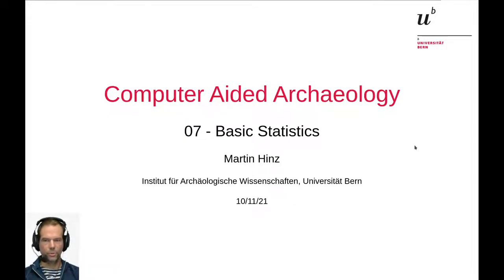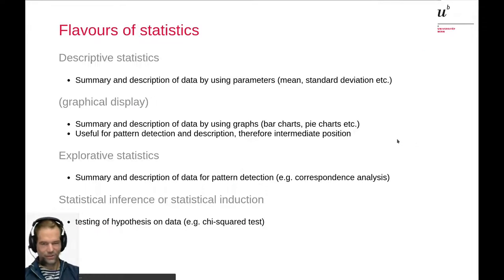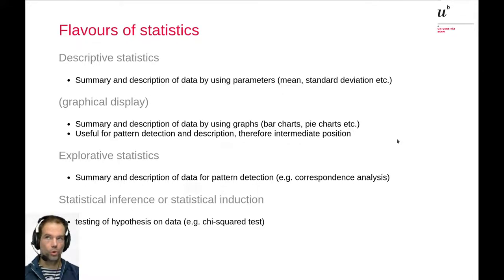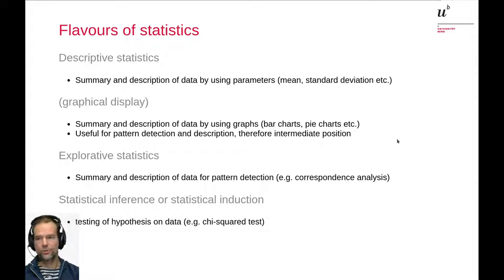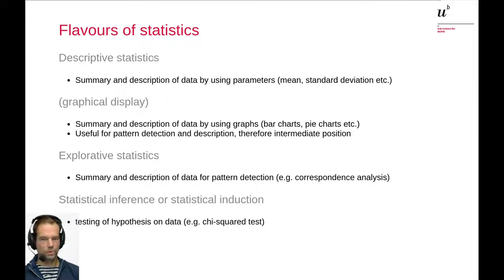In today's lecture we will talk about basic statistics. We already applied basic statistics in a certain sense, and we will have a view on another aspect here. The background for the division of statistical analysis can be done in multiple ways. One way is to talk about the output of different statistical methods - one possibility is descriptive statistics, which tries to summarize and describe data using specific values that give information about variables in a more condensed form.